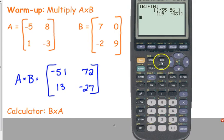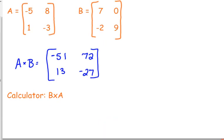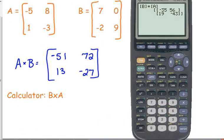So, it turns out that B times A, you're going to write here, B times A is negative 35, 56, 19, negative 43.